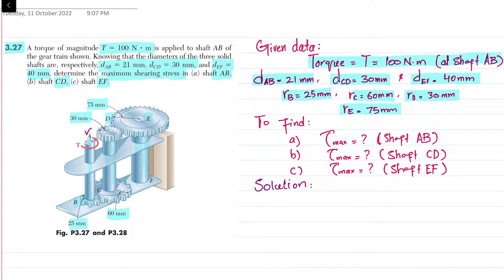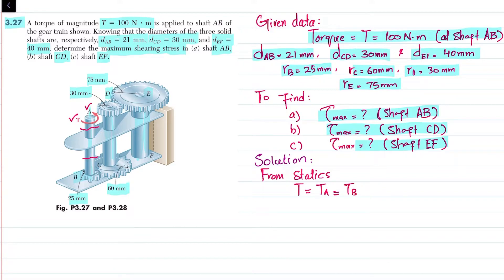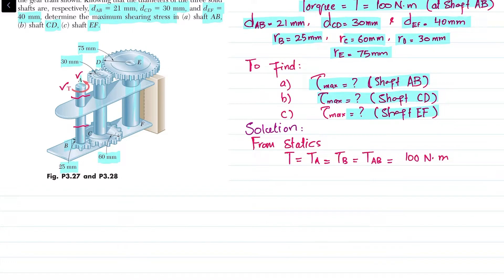We have to find the maximum shearing stress in shaft AB, shaft CD, and shaft EF. From statics, if we cut the shaft at any point, the torque T will be equal to the torque at any section. So the torque in shaft AB equals T_AB = 100 N·m.